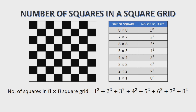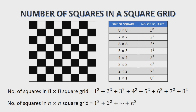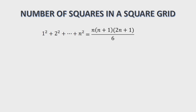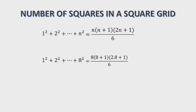In case there are n by n square grids, the number of squares will be 1² + 2² + ... + n². In mathematics, we have a formula to find the sum of squares of n natural numbers: n(n+1)(2n+1) / 6. To find the number of squares in a chess board, we replace n with 8, giving us 8 × 9 × 17 / 6, which equals 204. So there are 204 squares in a chess board.